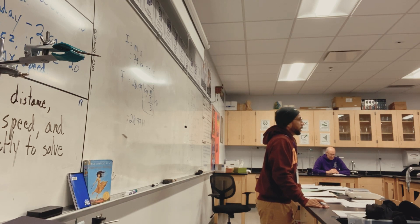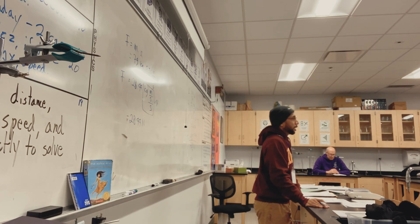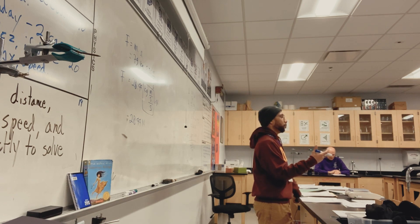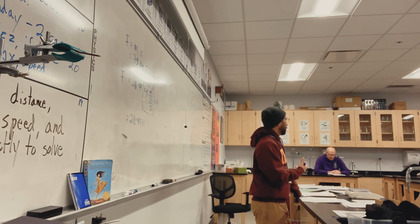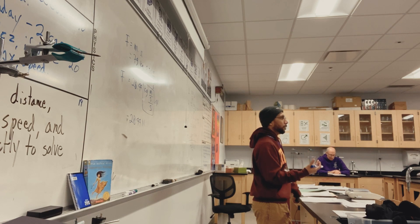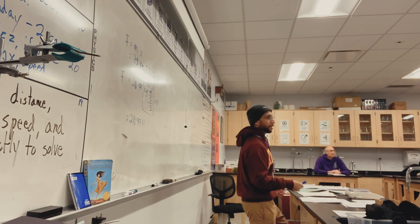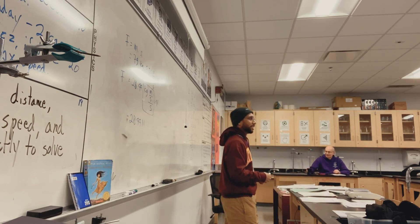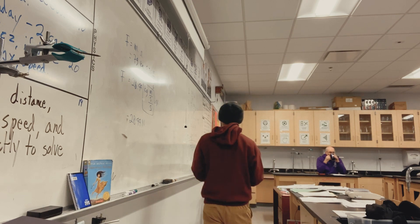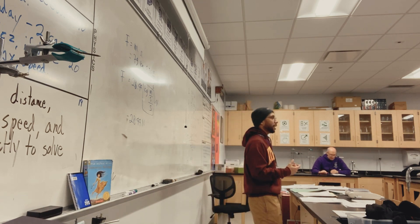Yesterday we discussed your graph, and you guys know that the relationship between force and the stretch of the spring can be seen in your slope. The slope actually tells us about the spring constant — can anyone remind me what the slope of your graph represents? The slope tells us about the spring constant.